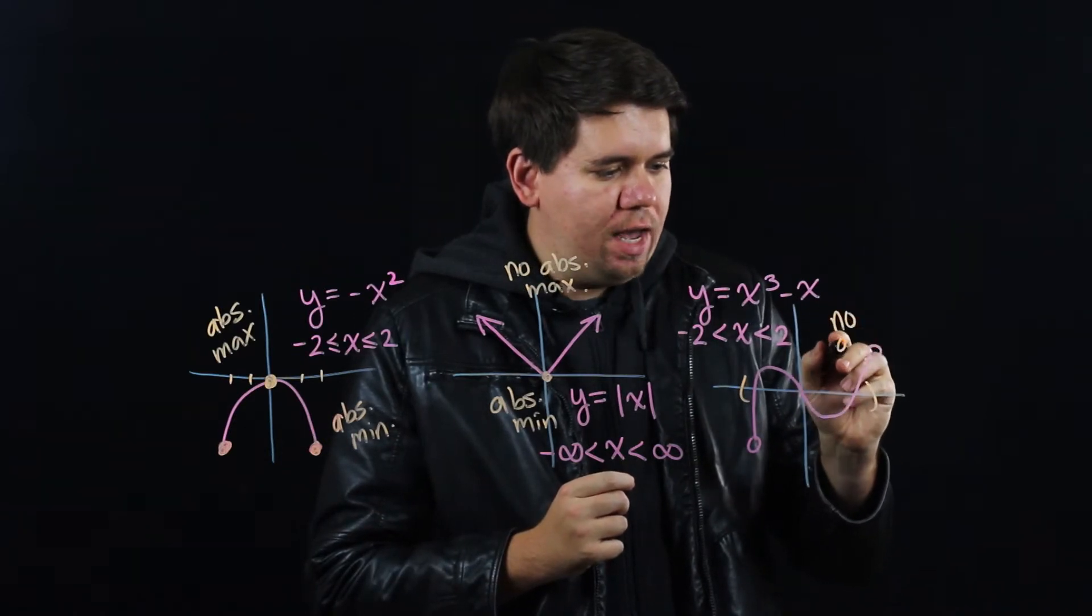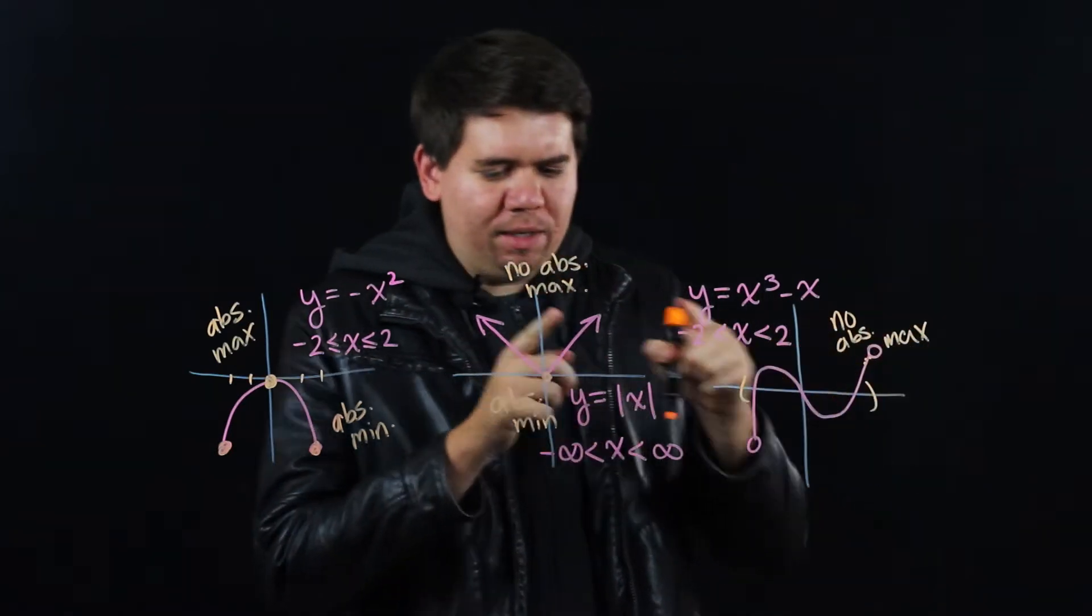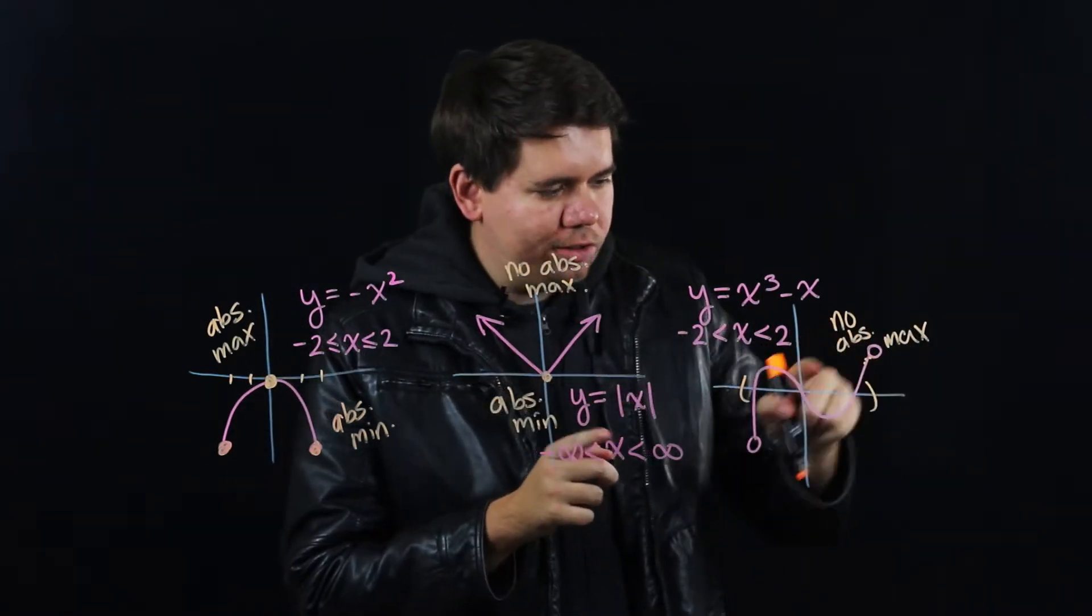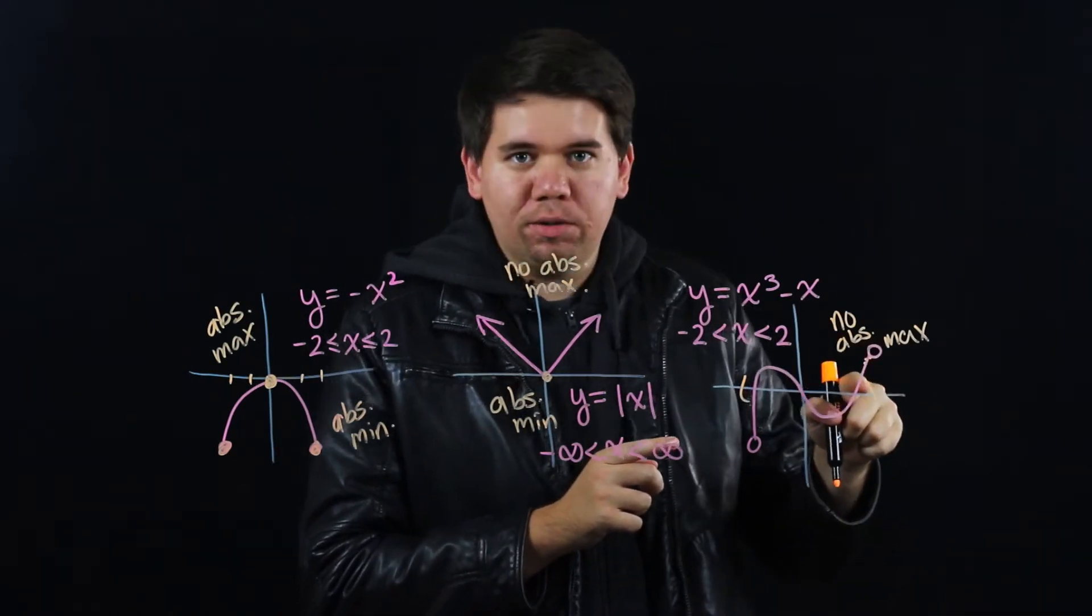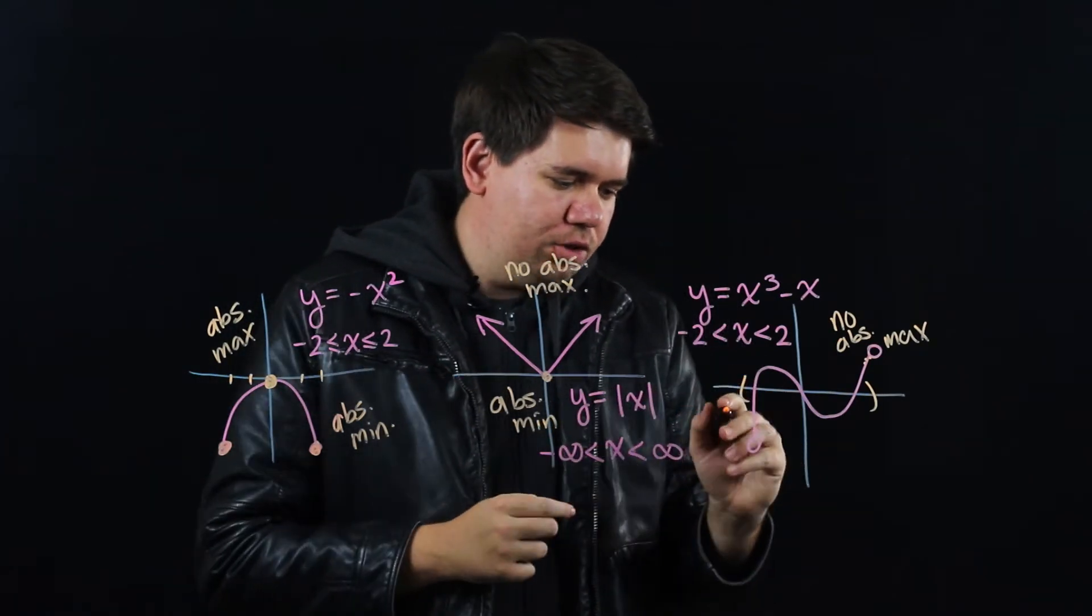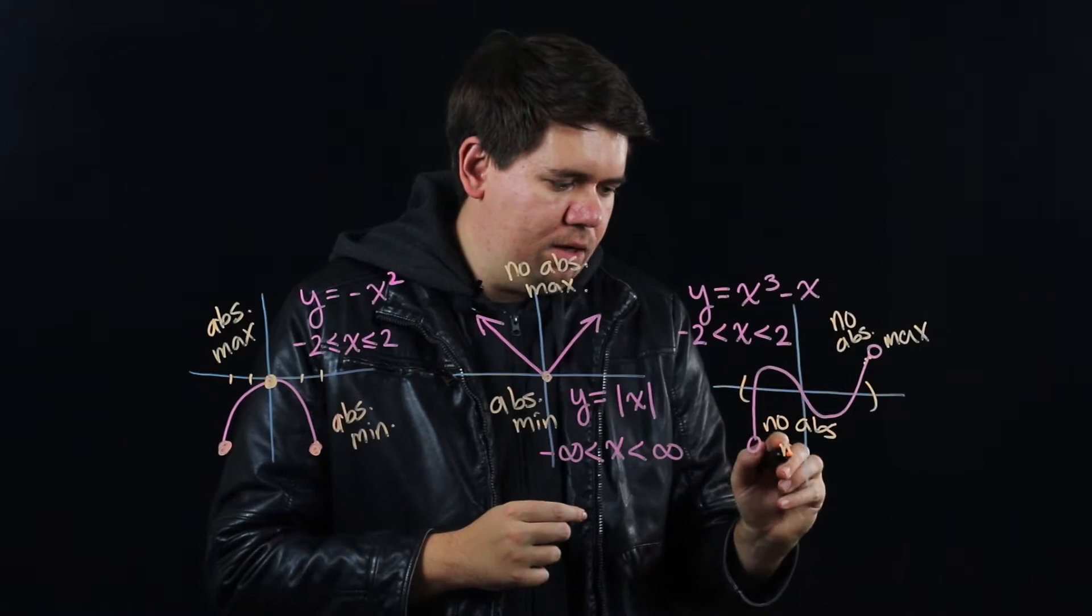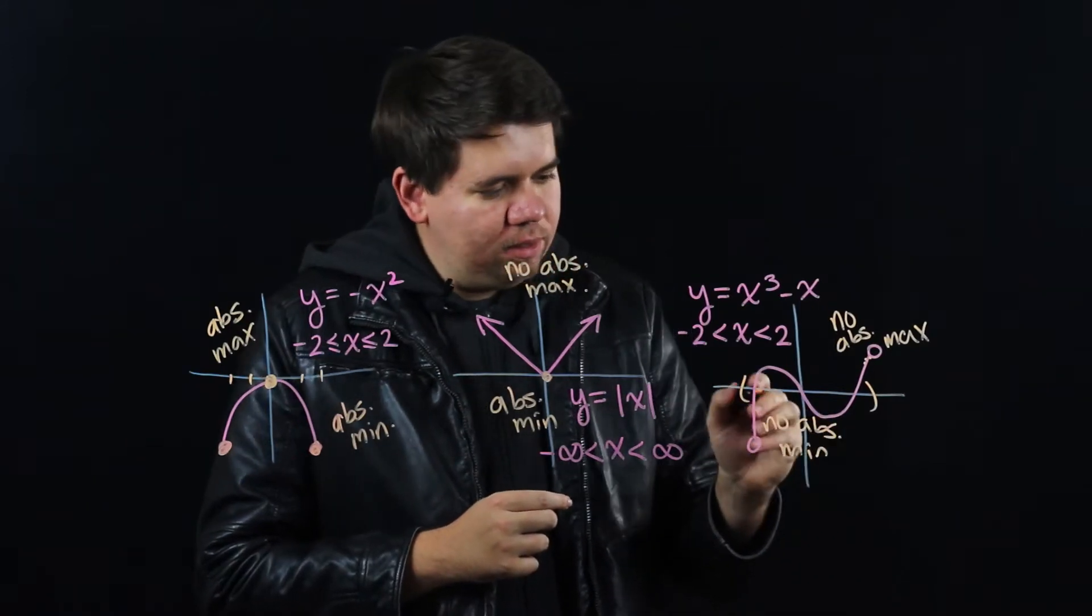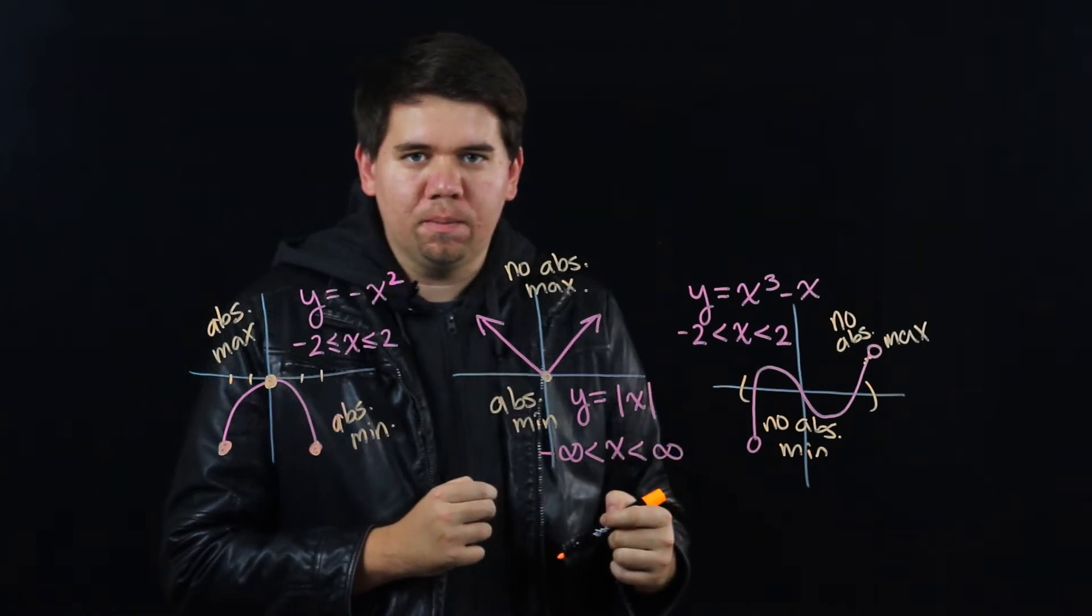It's a little bit like the previous example where it keeps getting larger. It doesn't go off to infinity but it does keep getting larger and larger as you come closer to 2. In a similar way, here to the left there's no absolute minimum because it keeps getting smaller and smaller as you come closer to negative 2.